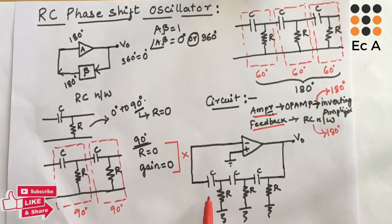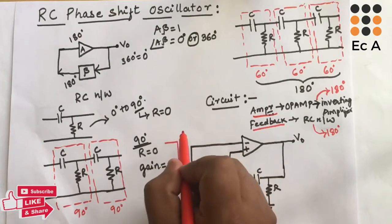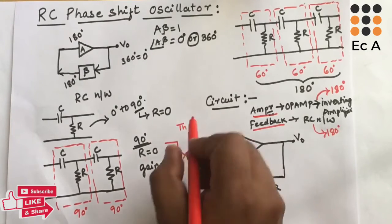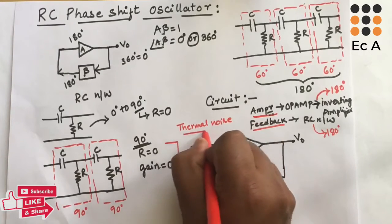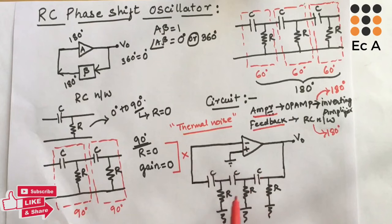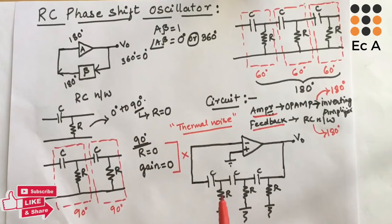This is the circuit of the RC phase shift oscillator. Oscillators do not have any external input connected — they work without any input signal. Thermal noise present in the circuit is responsible for the oscillations. Thermal noise has multiple frequency components, and the beta in the feedback stage is a frequency-selective device, meaning beta will provide a phase shift of 0 or 360 degrees for only one specific frequency component.